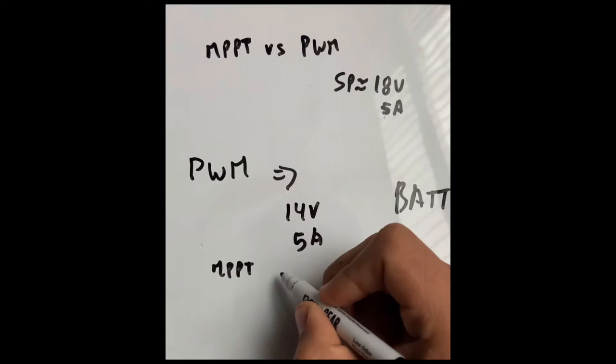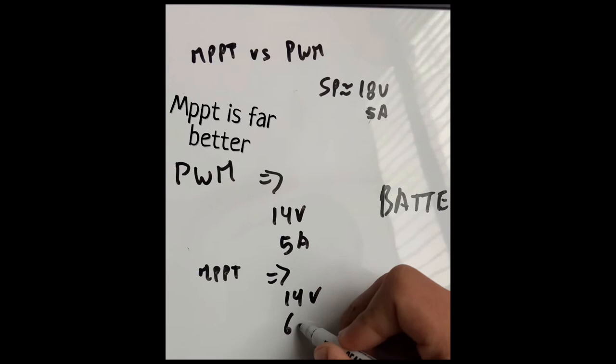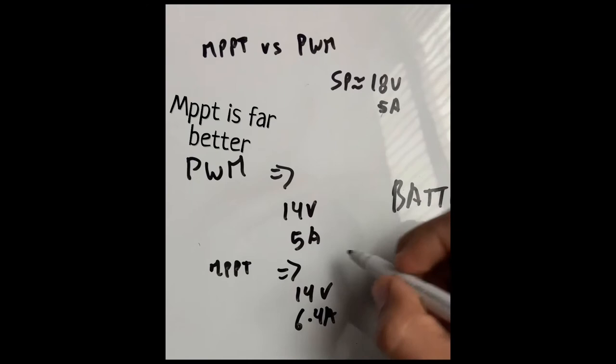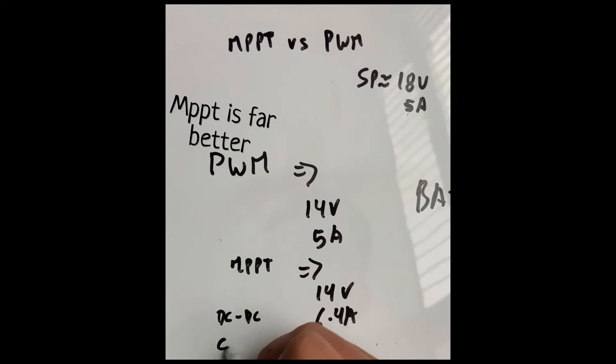Now if you use an MPPT, you still have 14 volts going to your battery, but you have 6.4 amps going to the battery. And this is because the MPPT has a DC to DC converter. So it's 20% more efficient than the PWM.